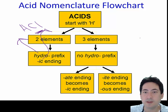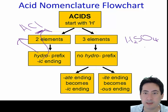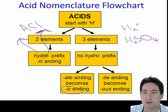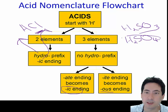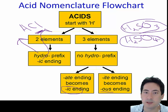If you have three elements, such as H2SO4, you don't use 'hydro'. It's a sulfate, so you use the '-ic' ending — that's sulfuric acid. If it was H2SO3, that's a sulfite, so you'd say sulfurous — that's sulfurous acid.